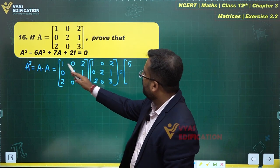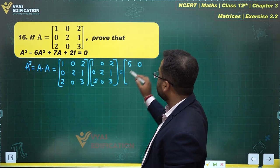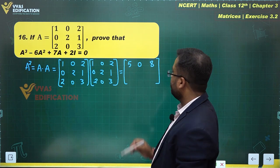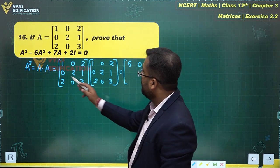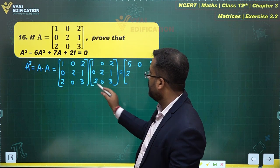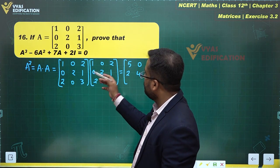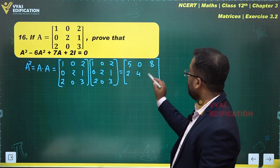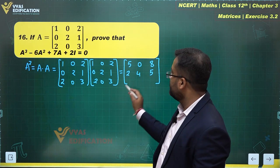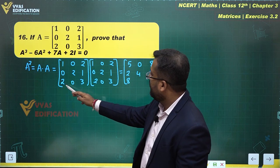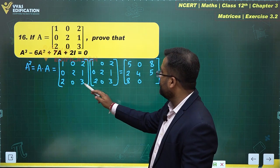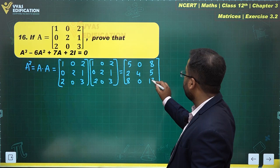Continuing the multiplication: first row times second column gives 0, and first row times third column gives 1×2 + 0 + 2×3 = 2 + 6 = 8. Second row: 0×1 + 2×0 + 1×2 = 2; 0 + 2×2 + 0 = 4; 0 + 2×1 + 1×3 = 5. Third row: 2×2 + 0 + 3×2 = 4 + 9 = 13. So A² = [5 0 8 / 2 4 5 / 8 0 13].